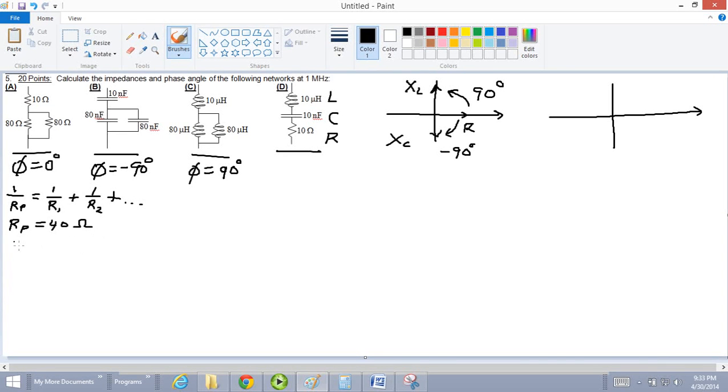And then effective resistance in series is just add the resistors up. Take that 40 ohm plus 10 ohms. So the total resistance, RT, is 50 ohms. So that answers part A.